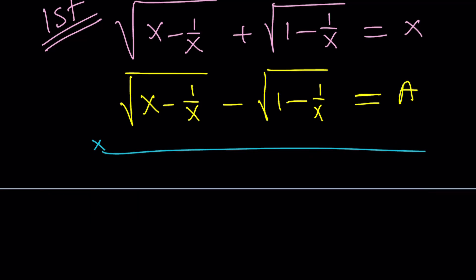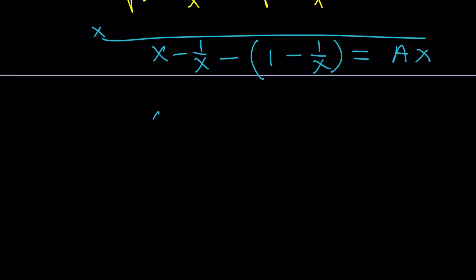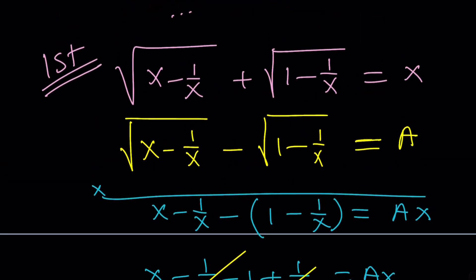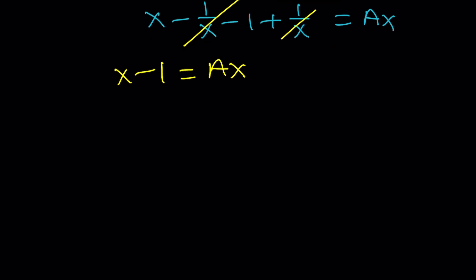So, this is going to be the following. The first expression inside the radical minus the second expression inside the radical. And that's equal to ax. Let's go ahead and expand. And 1 over x cancels out. So, we end up with x minus 1 equals ax. Now, our goal is to solve for a here so that we can set up another system. So, let's go ahead and solve for a. a is x minus 1 over x. We divided both sides by x.